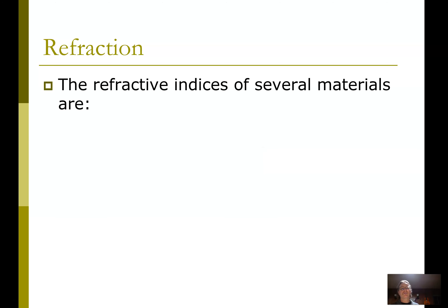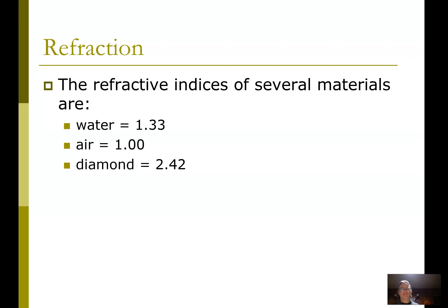The refractive indices of several materials: water is 1.33, air is 1 — it doesn't slow down much. Diamond has a very high index — that means a massive slowdown and, in terms of bending, massive bending.